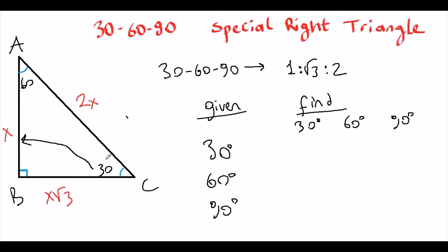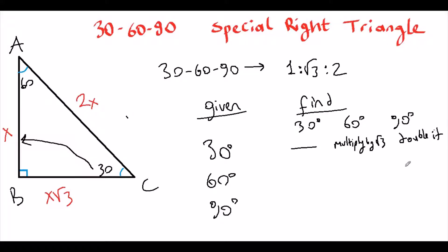If we're given across the 30°, then to find across the 60°, we multiply by √3. And to find across the 90° (the hypotenuse), we just double it — multiply by 2.